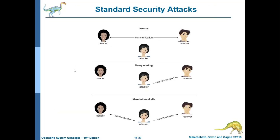The standard security attacks include normal communication between sender and receiver, masquerading — where the receiver thinks they are talking with the sender but it is actually the attacker — and man in the middle attack, which is the general term. In a man in the middle attack, both the sender and receiver believe they are communicating with each other but are actually communicating through the attacker.